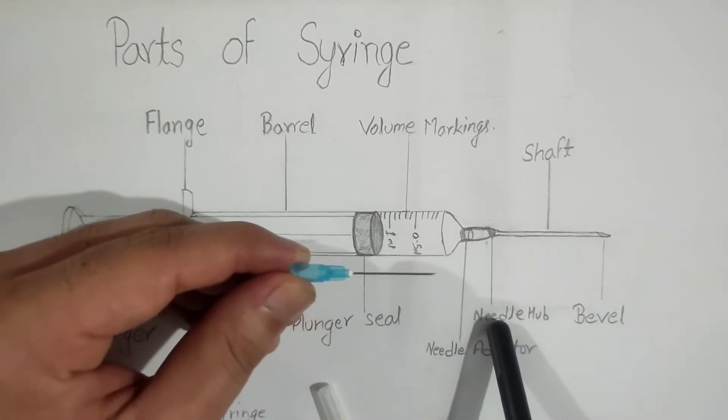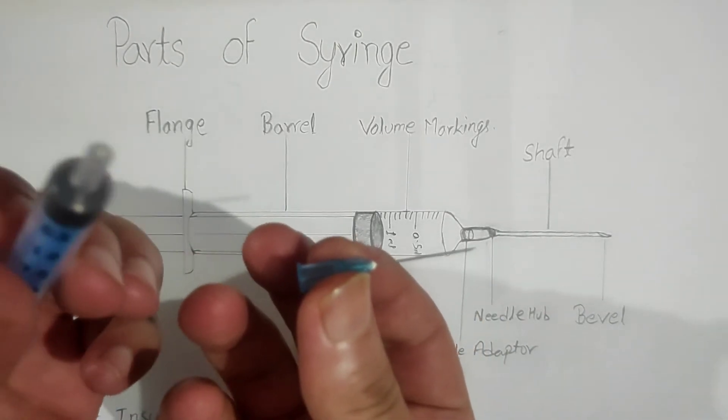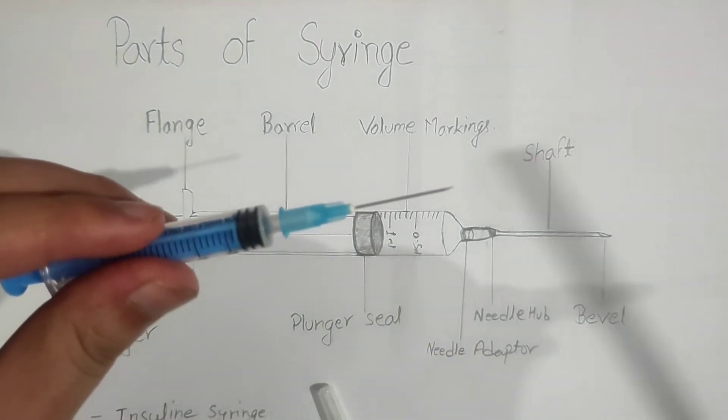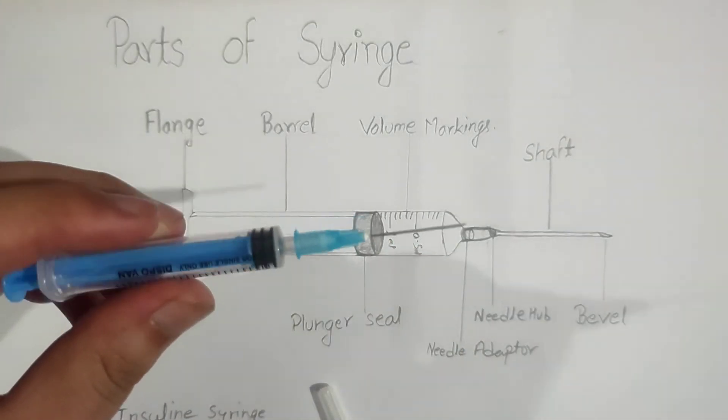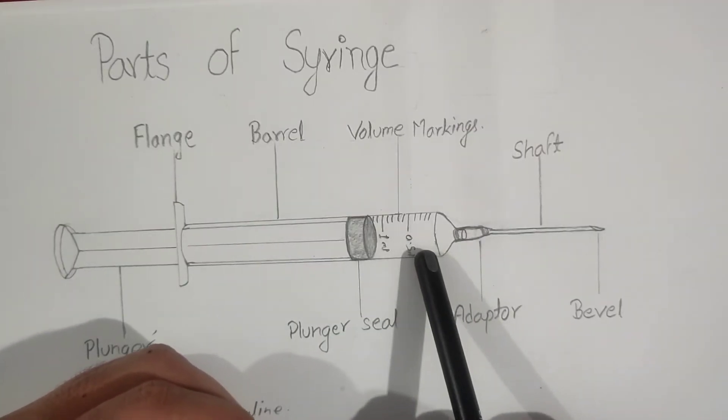known as the needle hub. When this whole part is attached with a syringe, it is known as the needle adapter. The marks and numbers which help to indicate the volume of